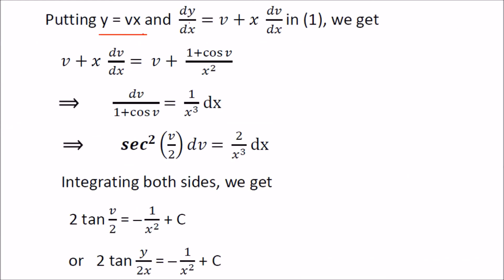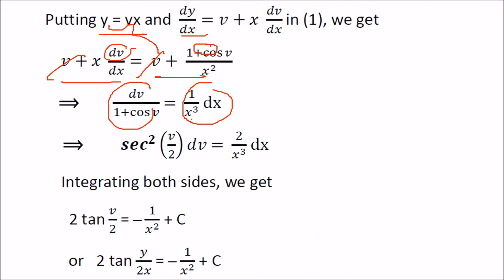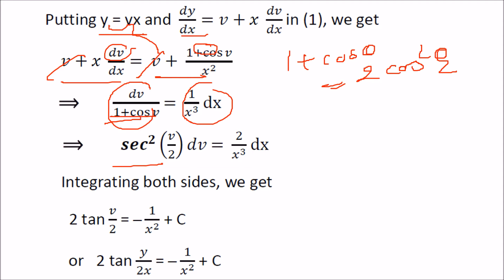Now solve it using y equals vx, so dy/dx equals v plus x·dv/dx. Substituting gives x·dv/dx equals (1 + cos v) / x². Using the identity 1 plus cos θ equals 2cos²(θ/2), this becomes 2cos²(v/2). Taking it to the other side gives sec²(v/2) dv equals 2/x³ dx. Integrating both sides: tan(v/2) equals minus 1/x² plus constant.